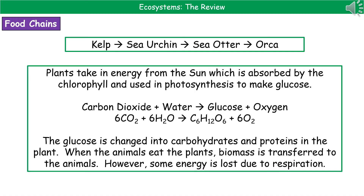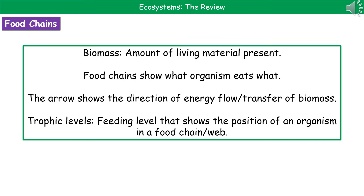One key point: if asked why you wouldn't have all of the energy from the Sun transferred along the chain, mention a process like respiration, which is how we lose some energy at each stage. When we refer to biomass, we're talking about the amount of living material present. When looking at food chains, we're looking at the transfer of biomass — the food chain literally shows us what organism eats what. The arrows in a food chain are very important because their direction shows the direction of energy flow and biomass transfer, so you've got to get that the right way around.